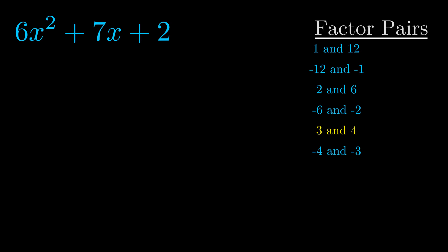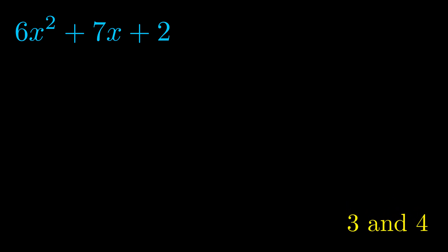And really this is the only factor pair that we need. Now once we have this factor pair, what we want to do is use it to split up the b value.